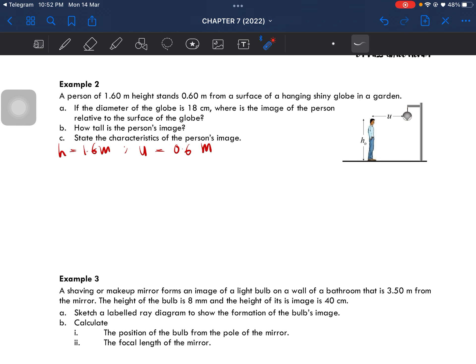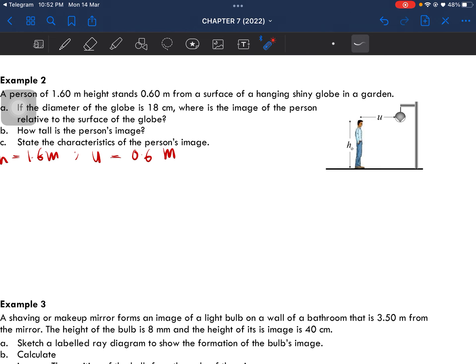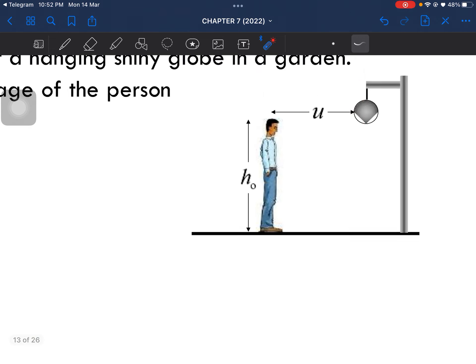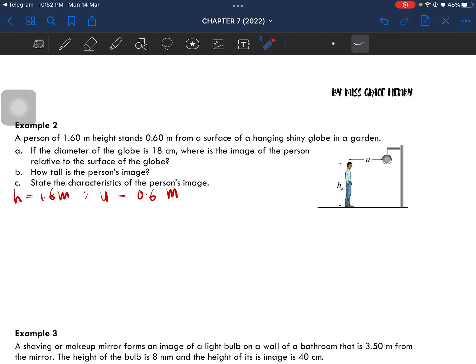We have to calculate the image formula, image of the person relative to the surface of the globe. If you look at here, this is a convex surface. If it's a convex surface, the focal length will be negative. The radius of curvature is gonna be negative, divide by the diameter, divide by 2. So this would be negative 0.09 meter.